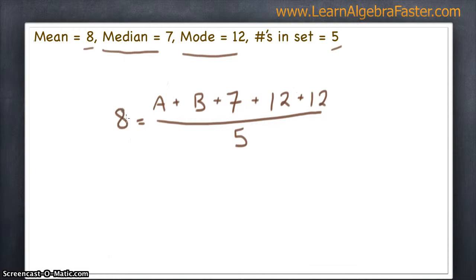Our target is eight, and so let's try to solve for A plus B. We need to get rid of this five, so we do inverse operations by multiplying by five on each side. So those cancel. Five times eight is 40, and we're simplified down to A plus B. We'll actually combine a step here. Seven plus 12 plus 12 is 31, so we'll go ahead and simplify to that.